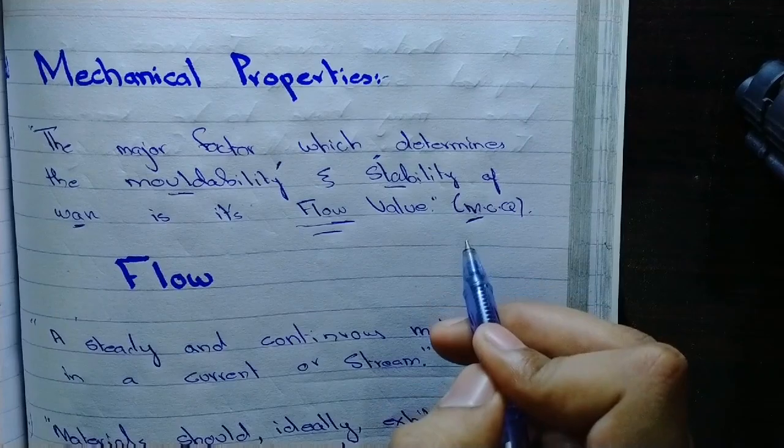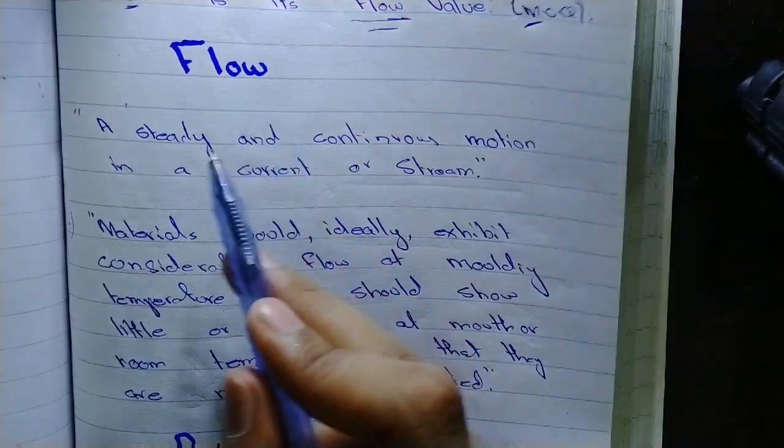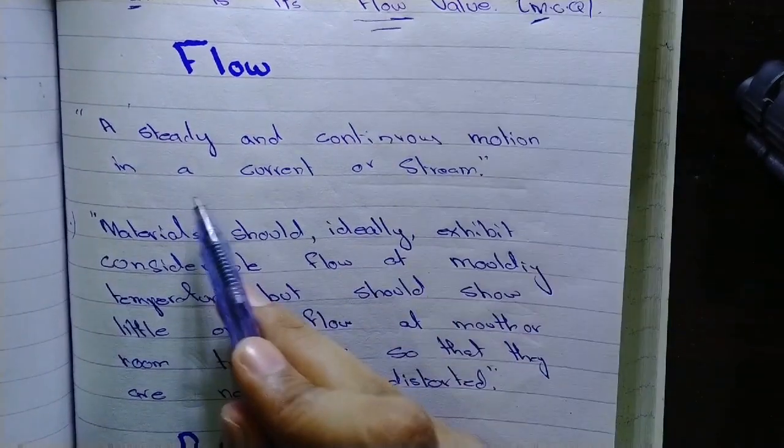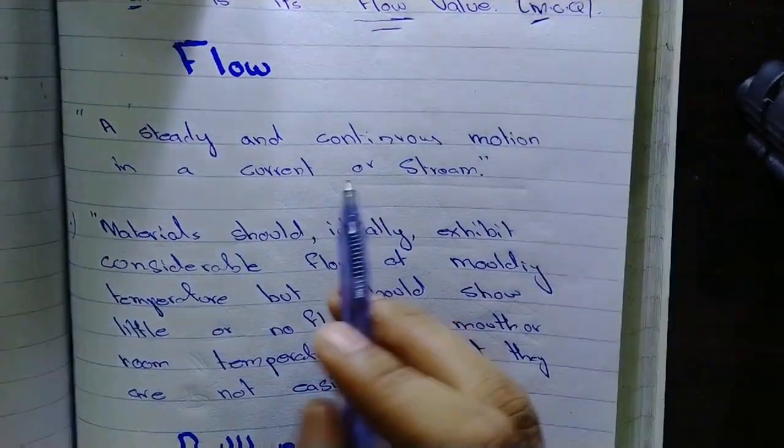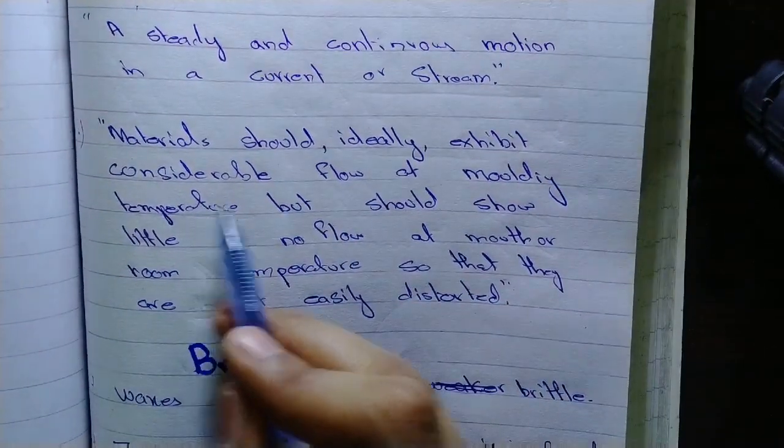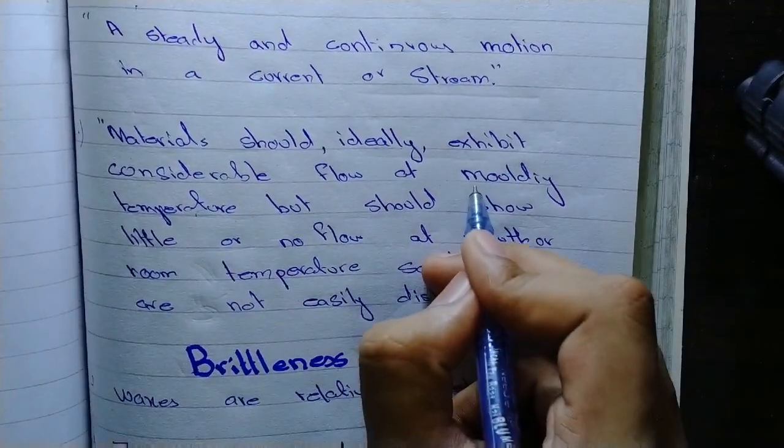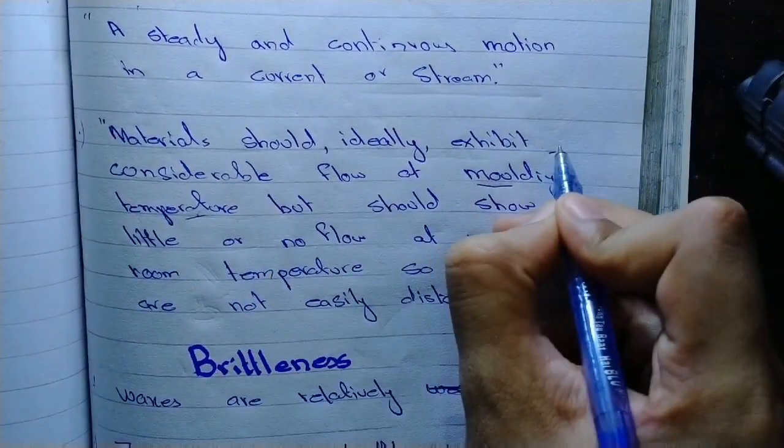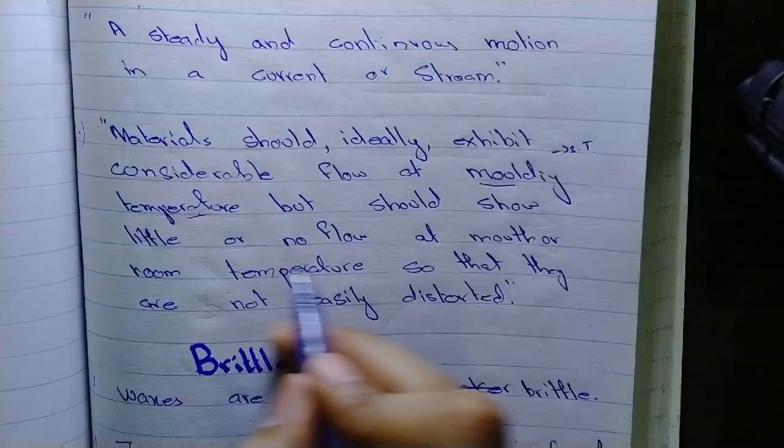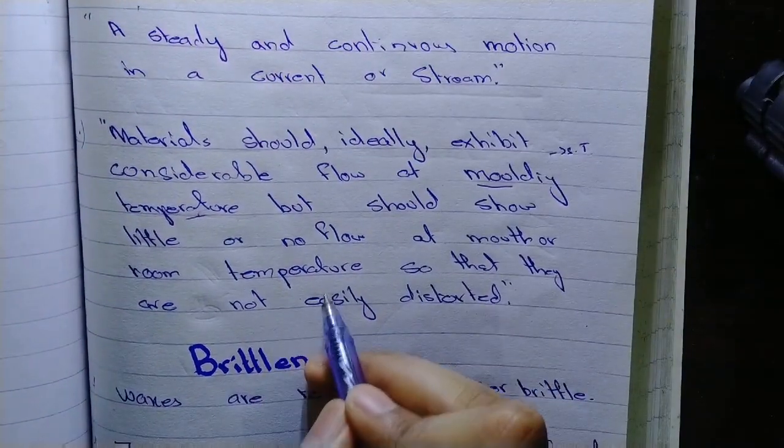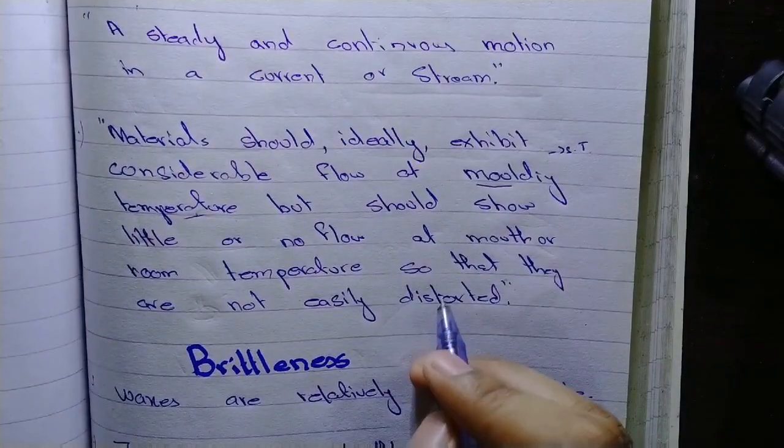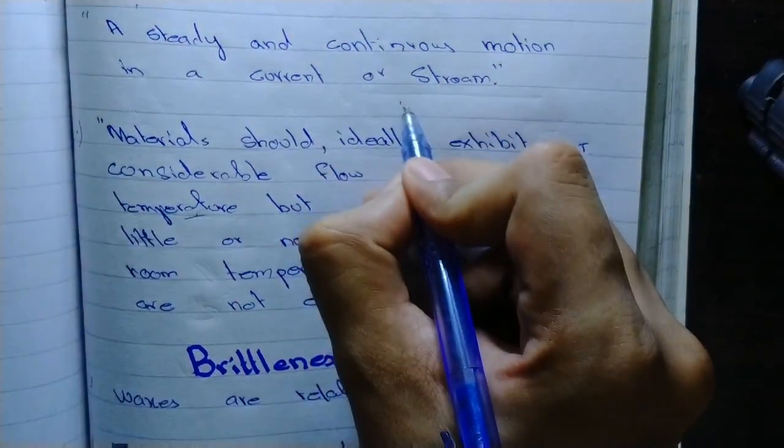Now the flow, in basic chemistry the flow is steady and continuous motion in a current or stream. The materials like waxes should ideally exhibit considerable flow at molding temperature, molding temperature means the softening temperature of the wax, but should show little or no flow at mouth or room temperature so that they are not easily distorted. It is very important in chairside techniques.